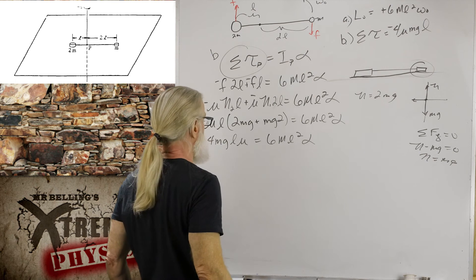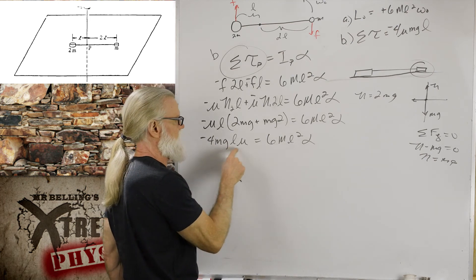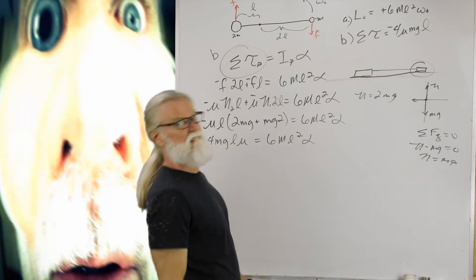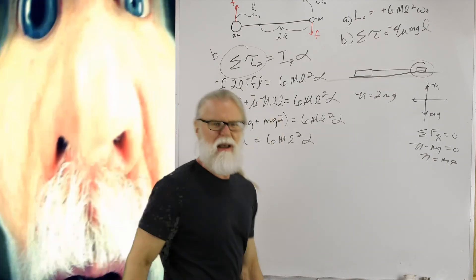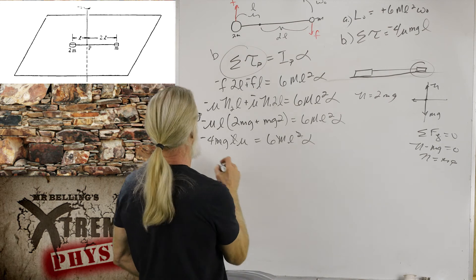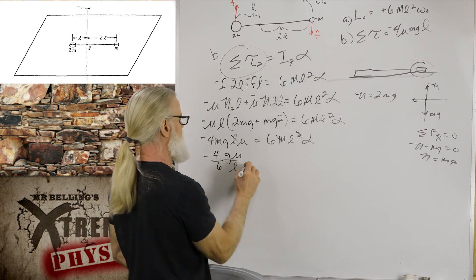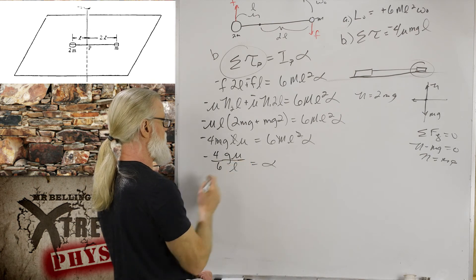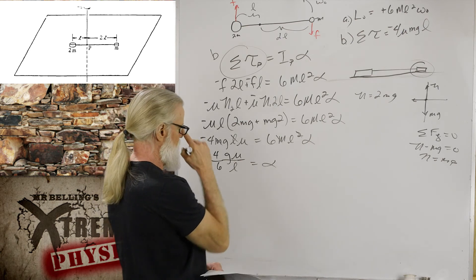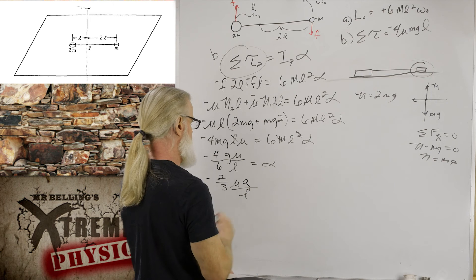Solving for alpha: from negative 4MGL·mu equals 6ML² alpha, we get alpha equals negative 4MGL·mu divided by 6ML², which simplifies to negative two-thirds mu·G over L. Checking units: G over L gives m/s² divided by m, which is per second squared — correct for angular acceleration. Since this is constant, we can use the circular kinematics equations.